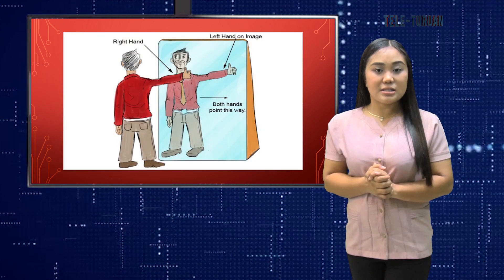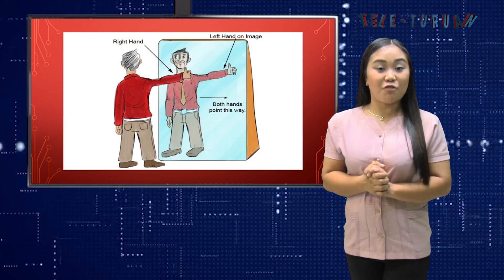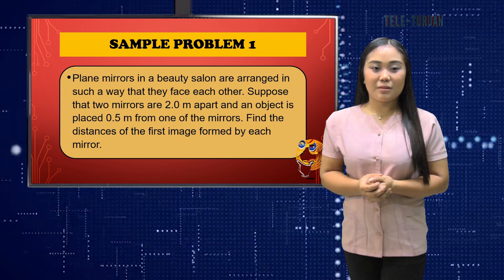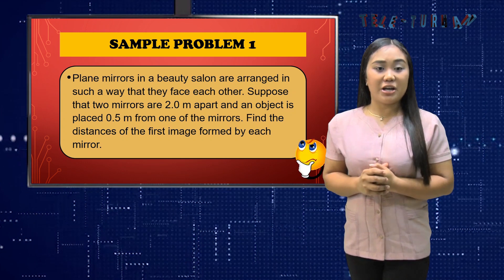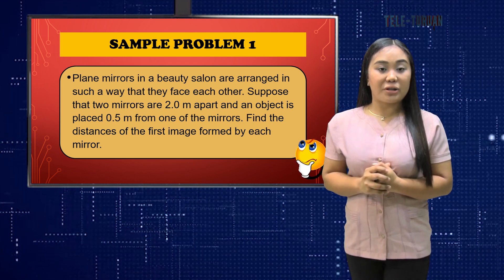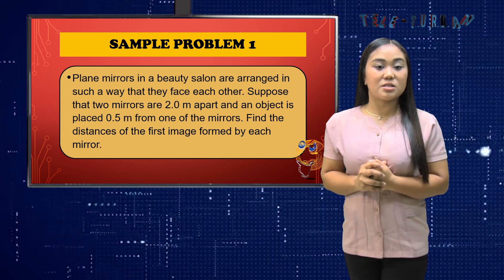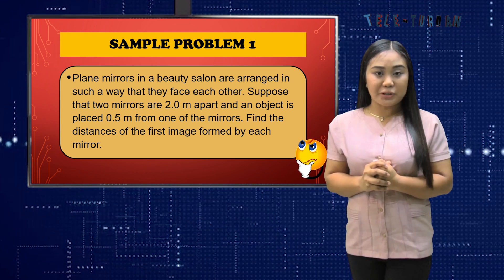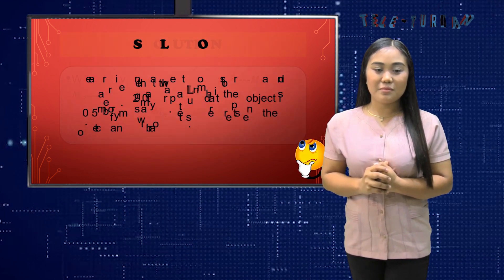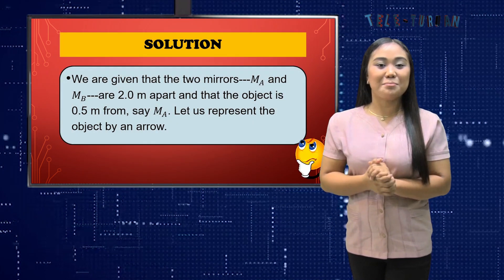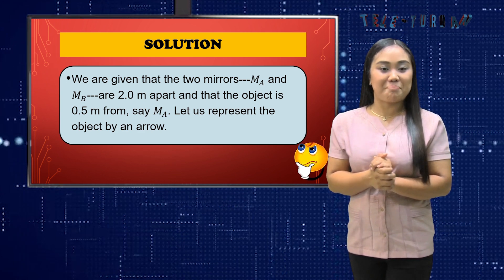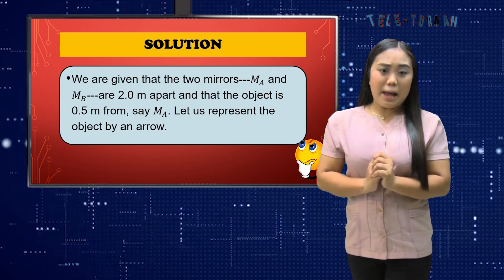Laterally reversed means that the left of the object becomes the right of the image, and vice versa. Now let's solve a sample problem. Plane mirrors in a beauty salon are arranged so that they face each other. Suppose the two mirrors are 2.0 meters apart and an object is placed 0.5 meters from one of the mirrors. Find the distances of the first image formed by each mirror. We are given that the two mirrors, M sub A and M sub B, are 2.0 meters apart and the object is 0.5 meters from M sub A.